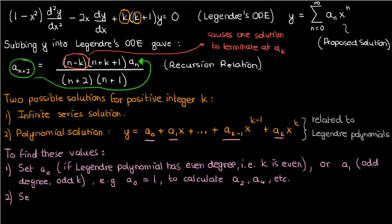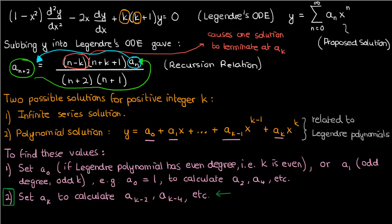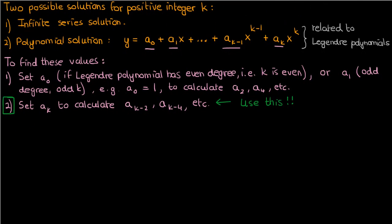The second technique is to set the last coefficient a_k to some constant and then find the previous coefficients — the opposite of the first technique. Just as each coefficient is related to the previous ones via the recursion relation, the previous coefficients are also related to the future ones. In this case, we're going to set a_k, the coefficient of the highest power of the degree-k Legendre polynomial, to a constant and solve for the coefficients below it.